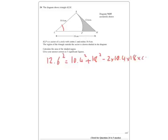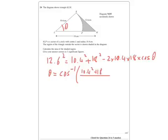...times 18 times cos of theta. Now you rearrange that, and you basically get theta equals cos to the minus 1 of 10.4 squared plus 18 squared minus 12.6 squared, all over 2 times 10.4 times 18.